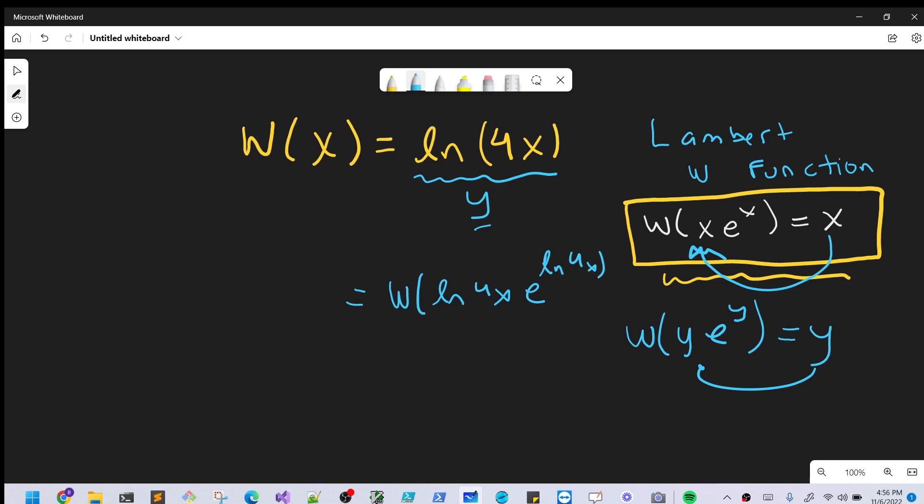On the left side, we're just going to have Lambert W of X. And now that we have Lambert W on both sides, we can just equate what we have inside the function. So we can say that X equals LN 4X, E LN 4X.